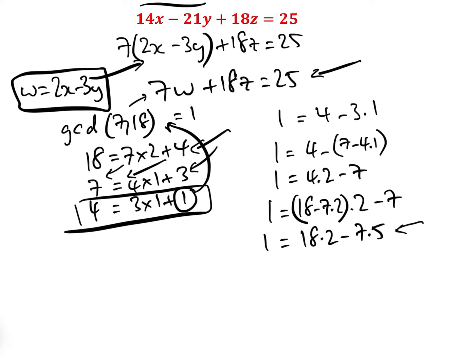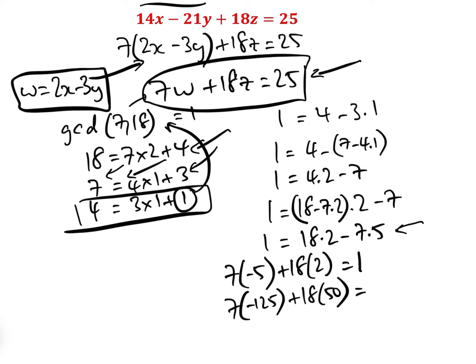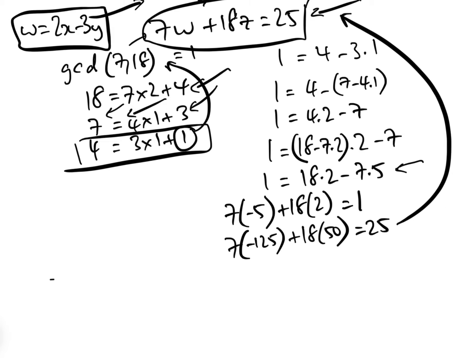From this equation we replace 4 by 18 minus 7 times 2. So 1 equals (18 minus 7 times 2) times 2 minus 7, i.e. 1 equals 18 times 2 minus 7 times 5. Now what we want to do is compare this equation to this equation.